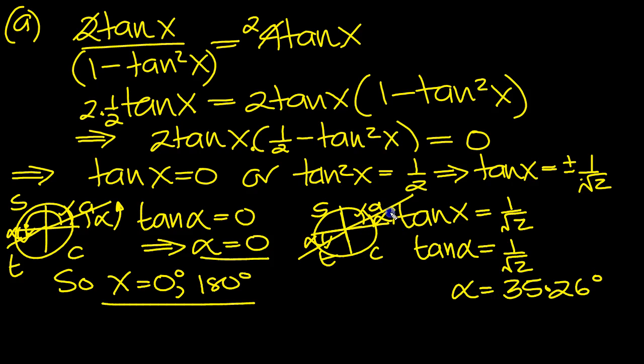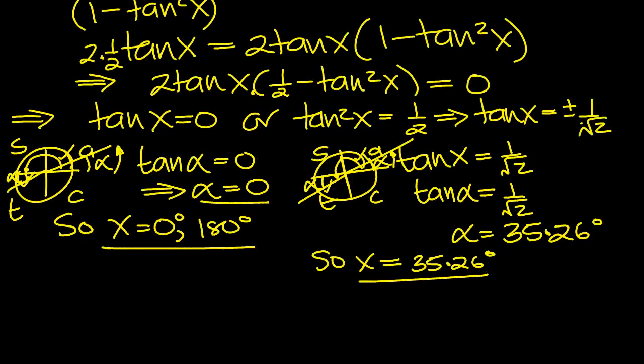So here's our first solution for x, is equal to 35.26. Now the other solution is around here, 180 plus 35, but that's outside our range that we're interested in. Because we're only interested in 0 to 180. So that's that one.